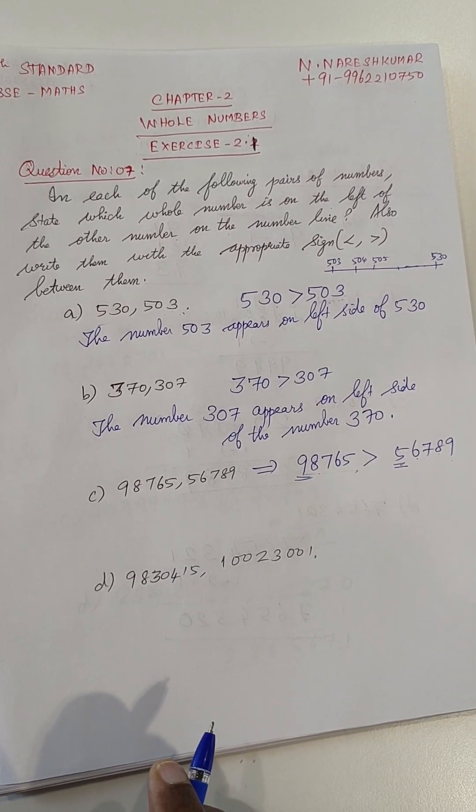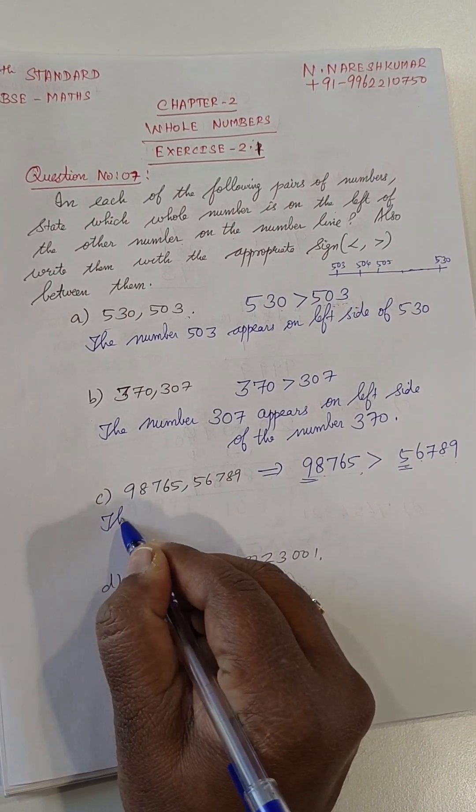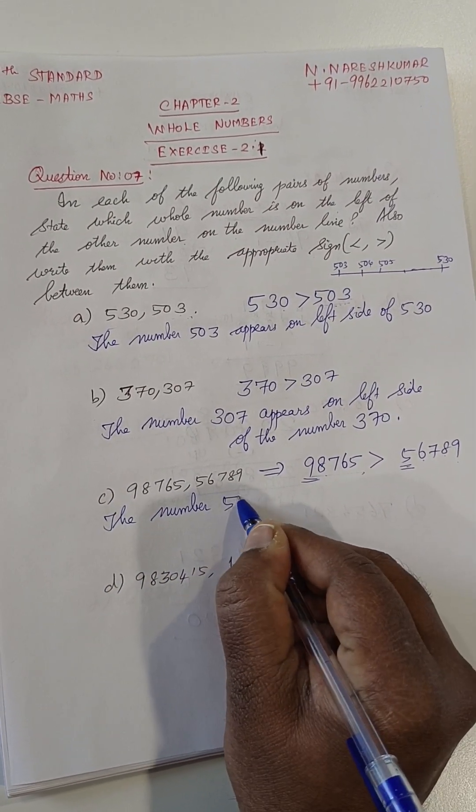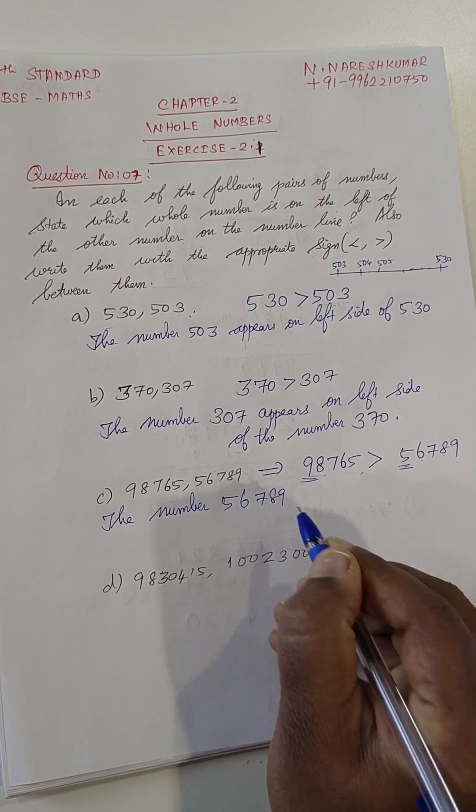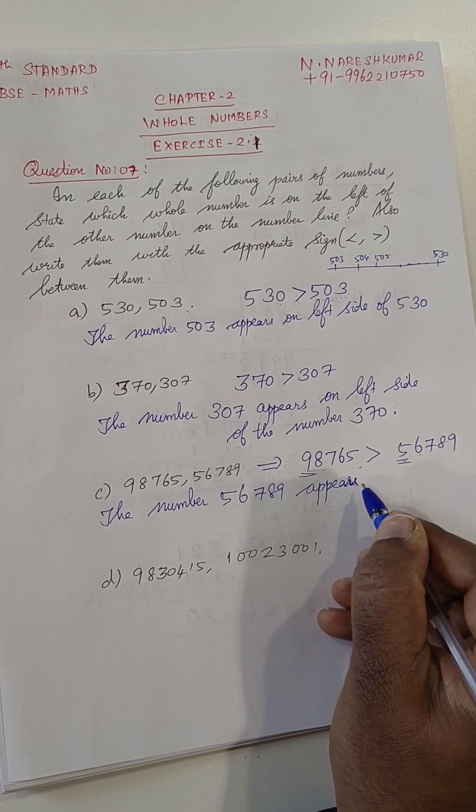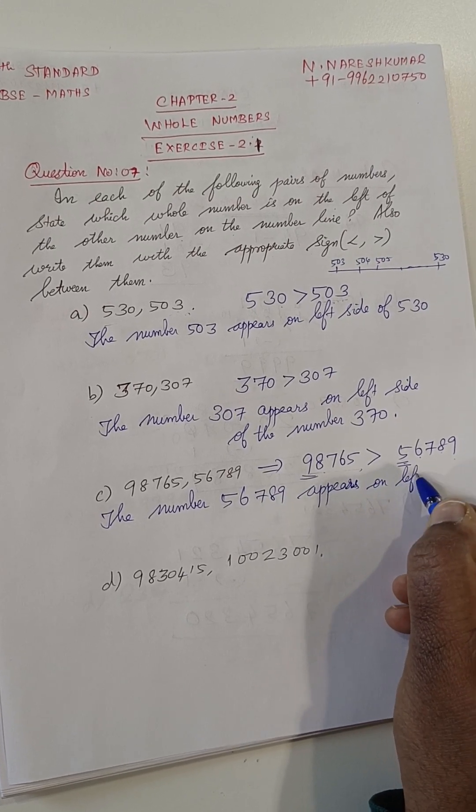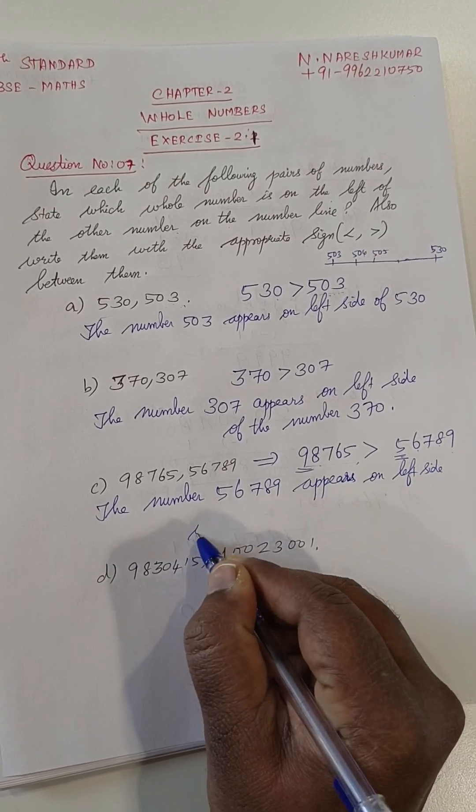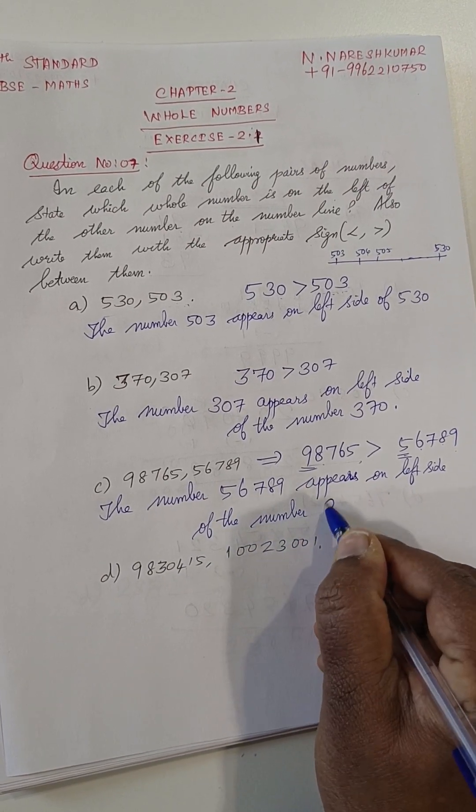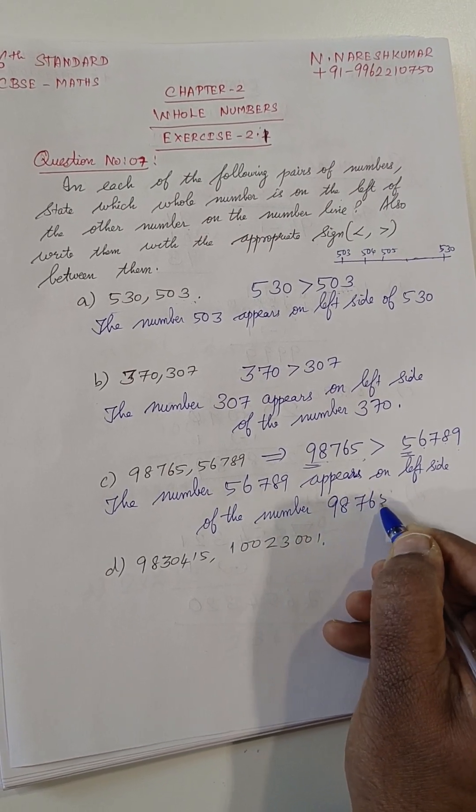So, we are putting it like this. So, the number 56789 appears on the left side of the number 98765.